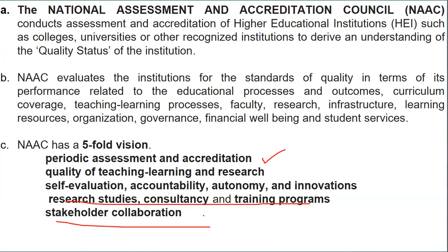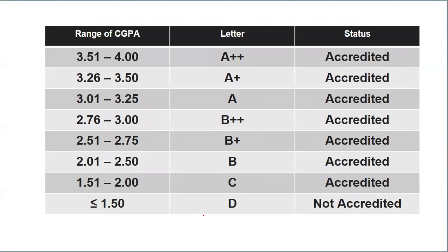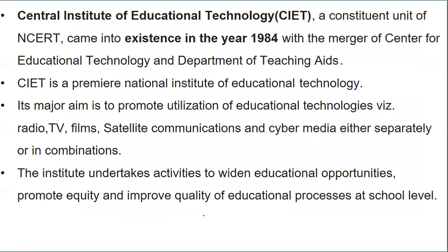NAAC grades institutions using a Cumulative Grade Point (CGP): A++ is accredited with a range of 3.51 to 4; D indicates the institution is not accredited. The Central Institute for Educational Technology (CIET) is a unit of NCERT, which came into existence in 1984. It is a premier national institute of educational technology with an aim to promote education via radio, film, TV, satellites, and cyber media, intending to promote equity and quality education at the school level.